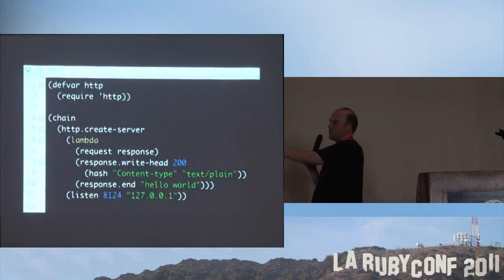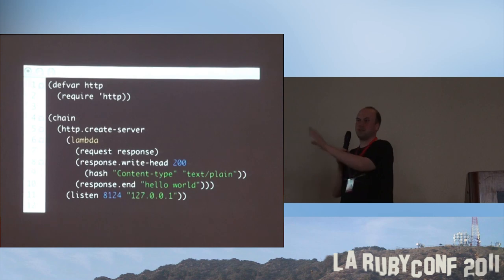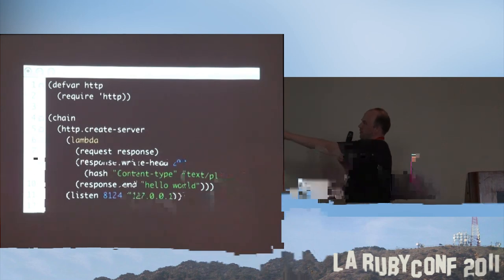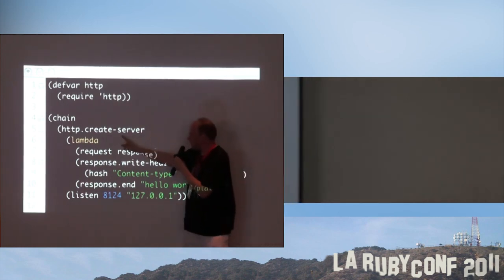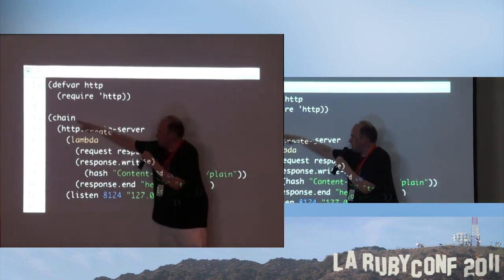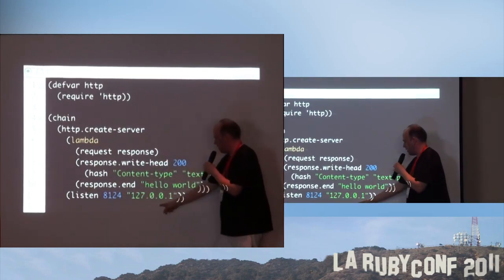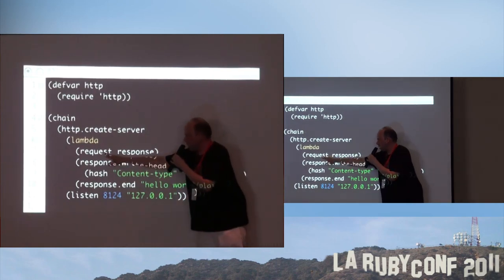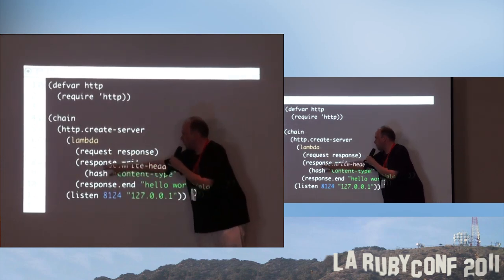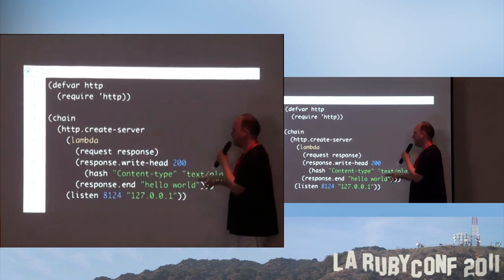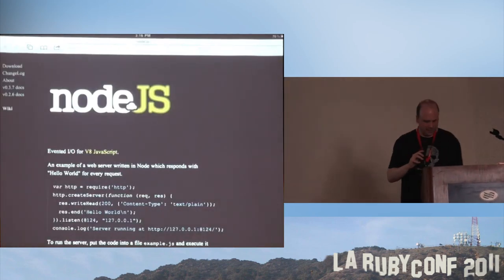This is the same code I showed you in one of the very first slides — to create a Hello World server using Node.js — because this compiles to Node.js. First you do def bar HTTP, require HTTP. Then you do a createServer on that HTTP and chain the results with listen, which listens on port 8124 on this IP address. You set up an anonymous function which takes a request and response as arguments, writes the head and content type text plain, and writes Hello World.